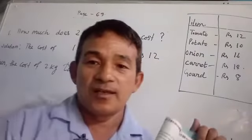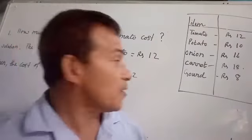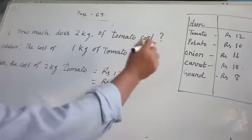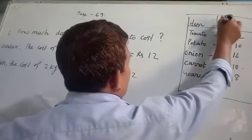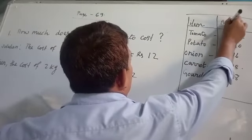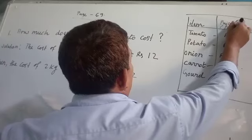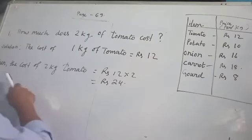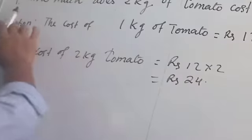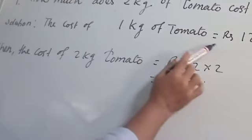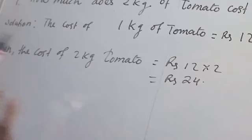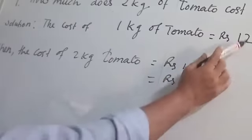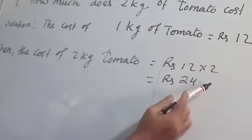You can solve the given questions easily. Question number one: how much does 2 kg of tomato cost? First you look at the item and this is the price per kg. One kg of tomato cost rupees 12, so the cost of one kg of tomato is Rs 12. Then the cost of 2 kg tomato can be calculated by multiplying 12 into 2 kg that you are going to buy. 2 kg tomato will cost rupees 24.